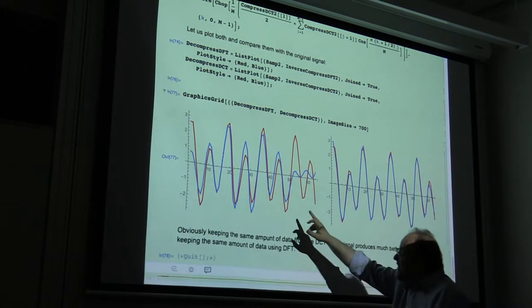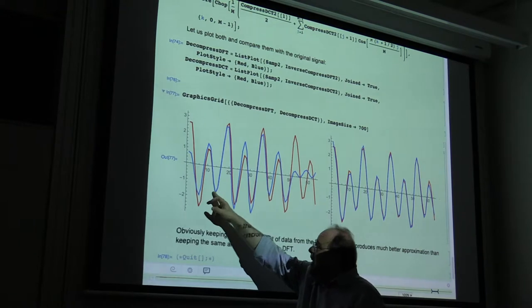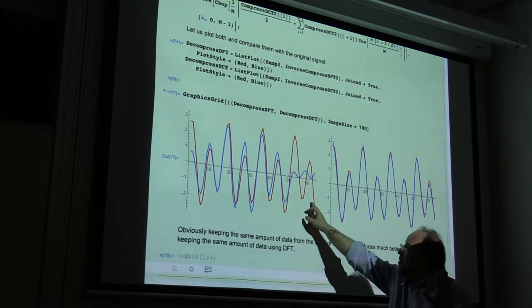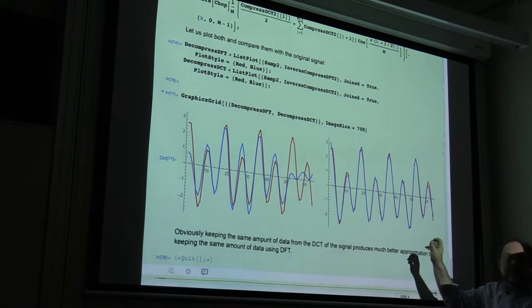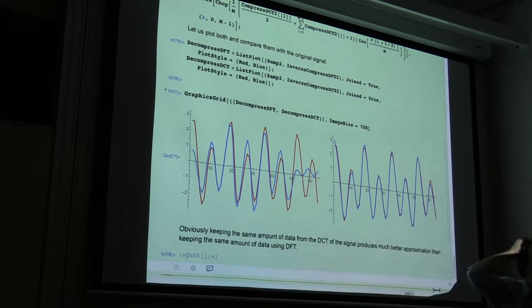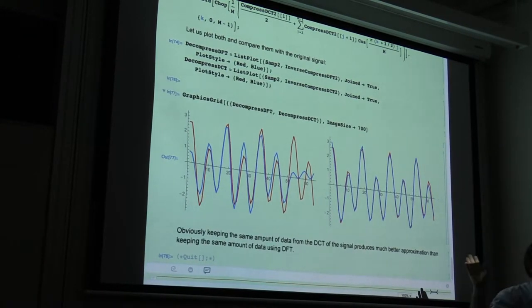Look, so this guy is DFT if you take eight largest coefficients. These guys discrete cosine transform if you take only eight largest coefficients out of 64.